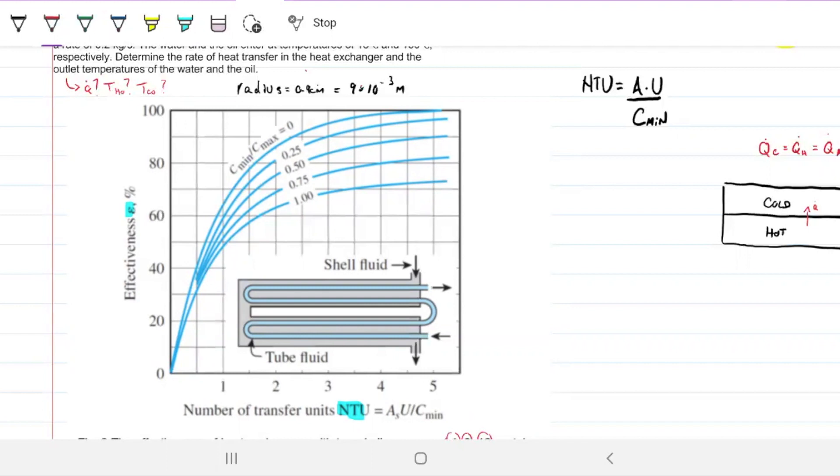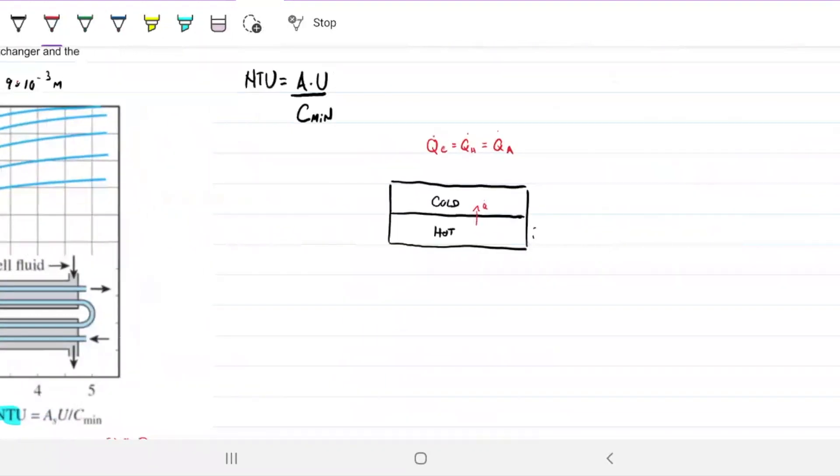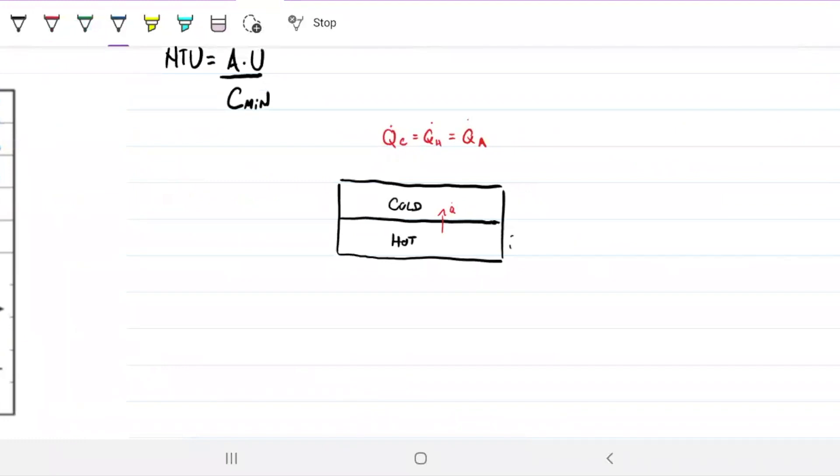What are we looking for here is Q and outlet temperatures. So let's first draw the things that we have here. It's a counterflow heat exchanger. Not that it matters much when we're doing NTU, but let's just keep it consistent.